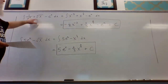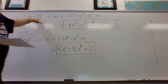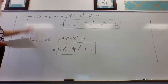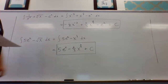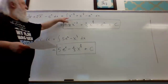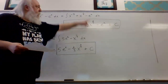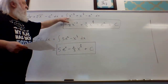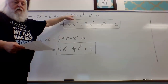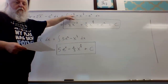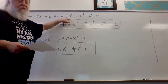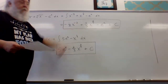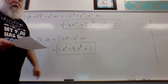The fourth root of x is the same as x to the one-fourth. Now antidifferentiating term by term: for x to the minus three, we add one to the exponent to get negative two, divide by negative two, and get minus one-half times x to the minus two power.